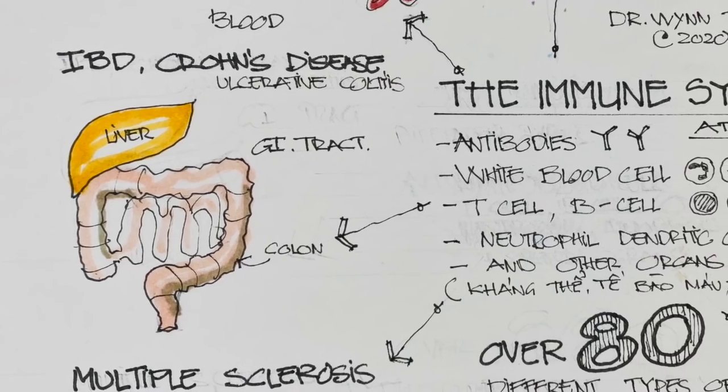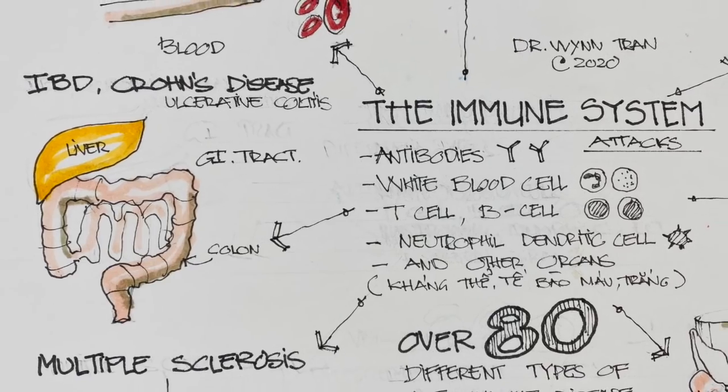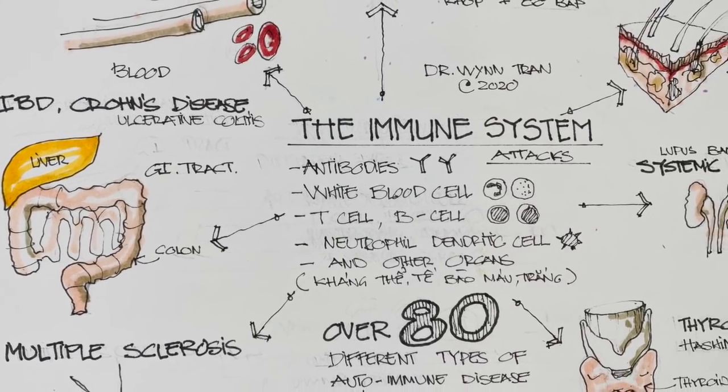You can see that whenever the immune system attacks different organs, the disease gets a different name. Moving from the nervous system to the GI system — which includes the mouth, esophagus, small intestine, and colon — when antibodies attack different parts of the GI tract, it also has different names. For example, Crohn's disease can inflame any part of the GI tract from the mouth to the anus, while ulcerative colitis affects only the lining of the large intestine or colon.